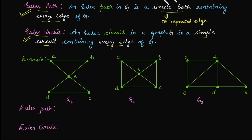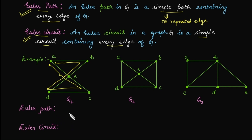Let's try to reconstruct the first graph. Starting from vertex A: A to B, B to E, E to D, D to C, C to E, and E to A. We started from vertex A and ended at A, so this graph has an Euler circuit. The Euler circuit is A→B→E→D→C→E→A. Since the endpoints are the same, it is categorized as an Euler circuit, and it will not have an Euler path.